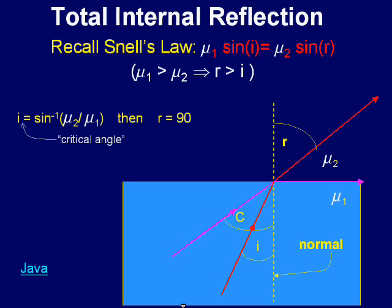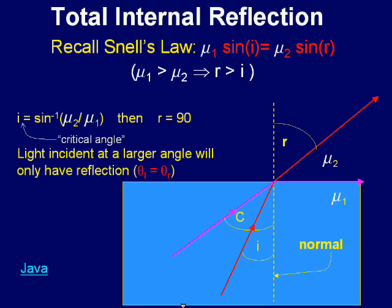If we increase i further, then the ray does not cross the medium and reflects back, following the law of reflection, θᵢ equal to θᵣ. This is called total internal reflection.